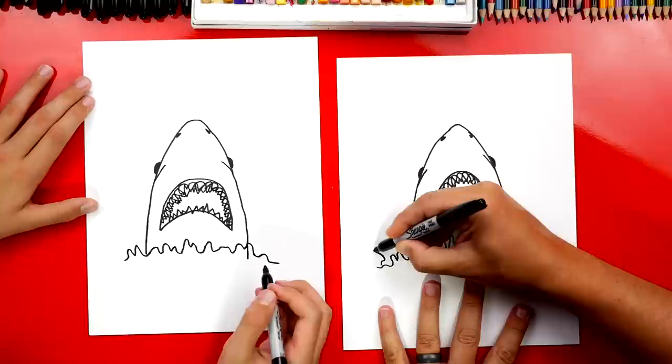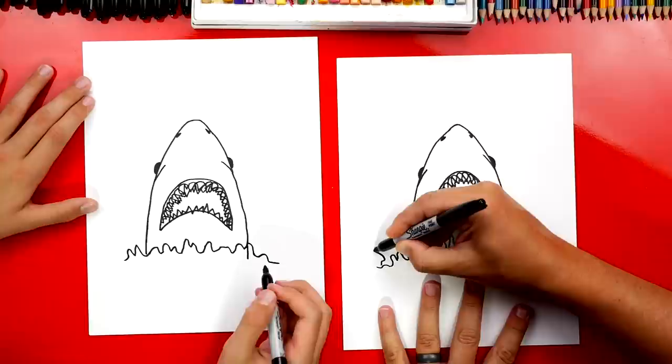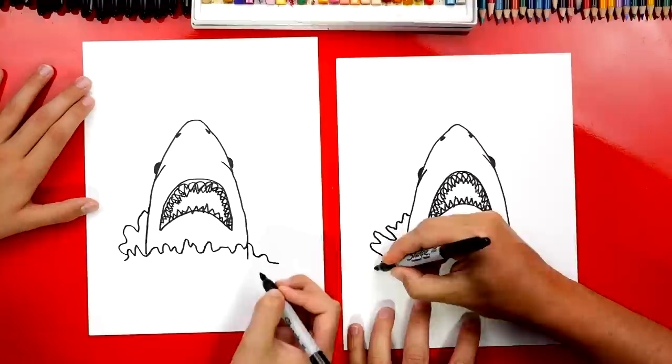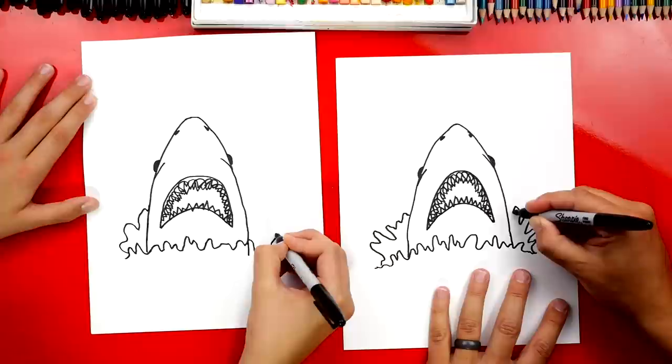Yeah that looks really cool. Now I'm gonna draw that same line except I'm gonna draw it coming out further and coming up and connecting to the side of his head. And we could do the same thing over here on this side. I'm gonna draw it splashing. Looks like he's busting out of the water.